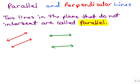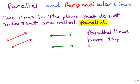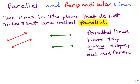So basically the main point here is that parallel lines have the same slope, but different y-intercepts, because if they had the same y-intercept and the same slope, then it would just be exactly the same line.